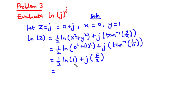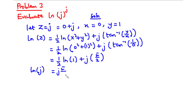Now, ln of 1 is 0, and 0 times one-half is still 0. Therefore, ln of j equals j times pi over 2.